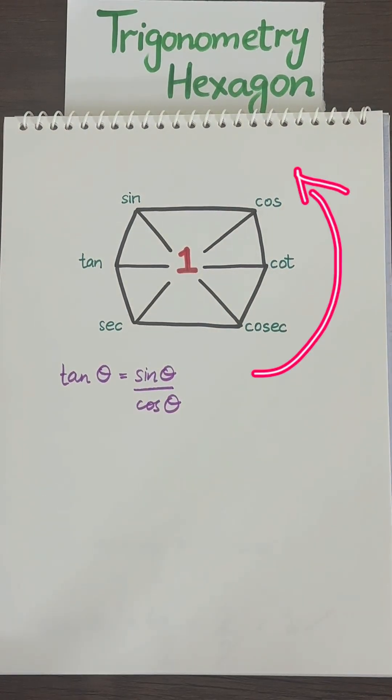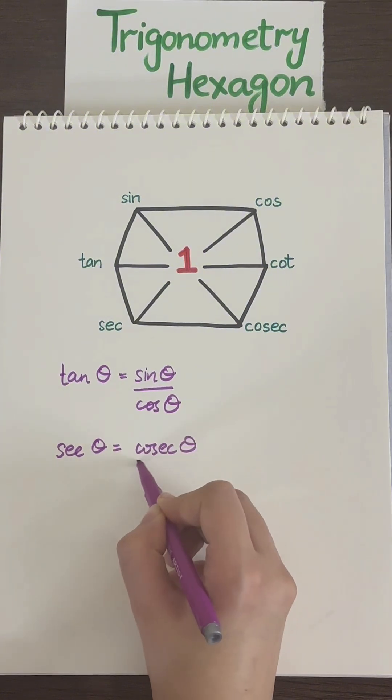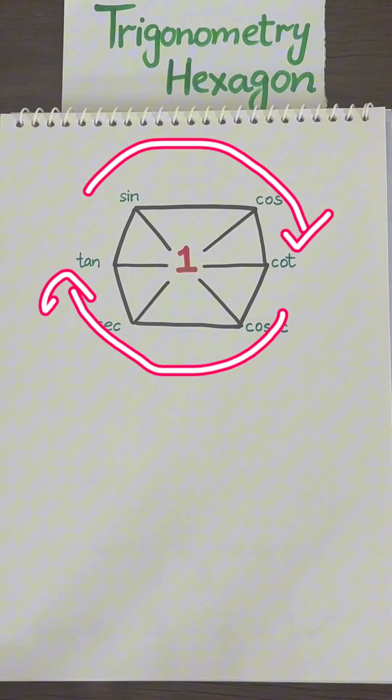We can also go in anticlockwise direction. Let's say secant theta, cosecant theta, and cotangent theta. That gives us secant theta equals cosecant theta over cotangent theta. You can do this for any three, for any direction.